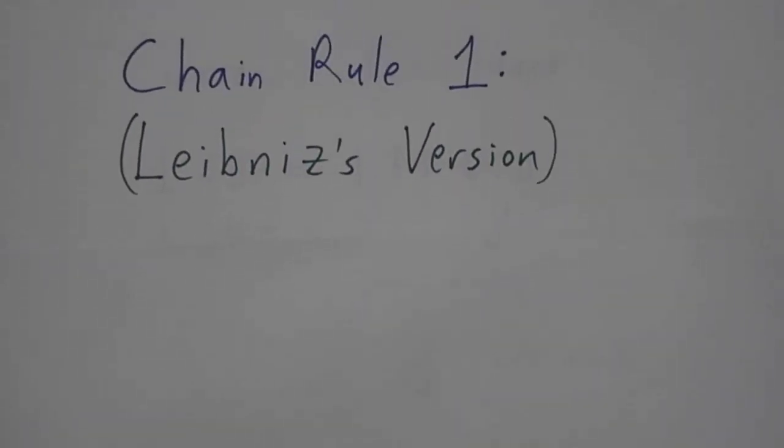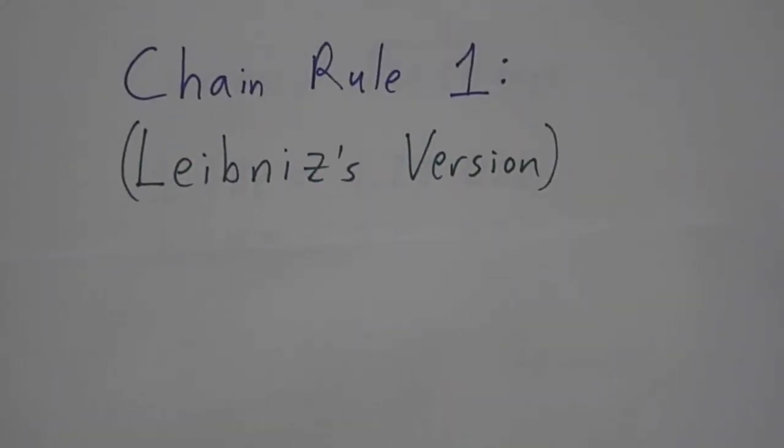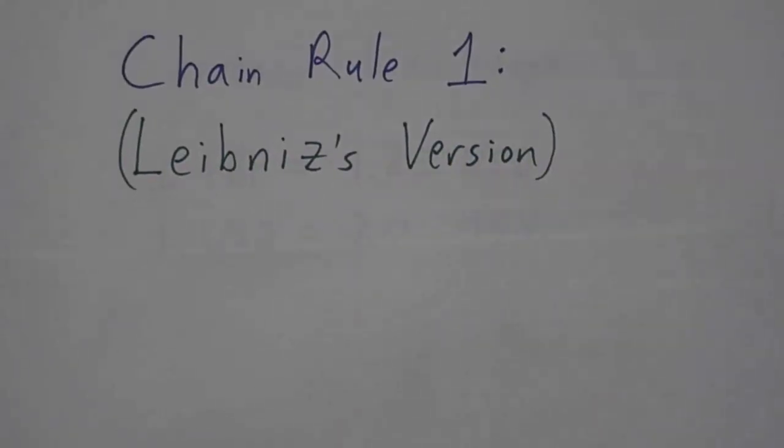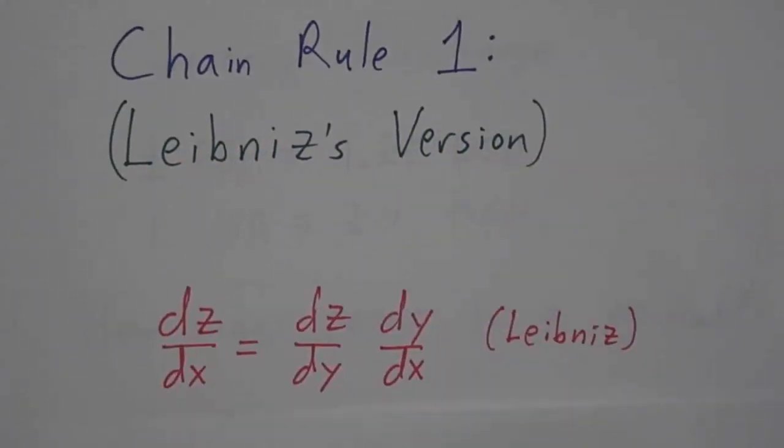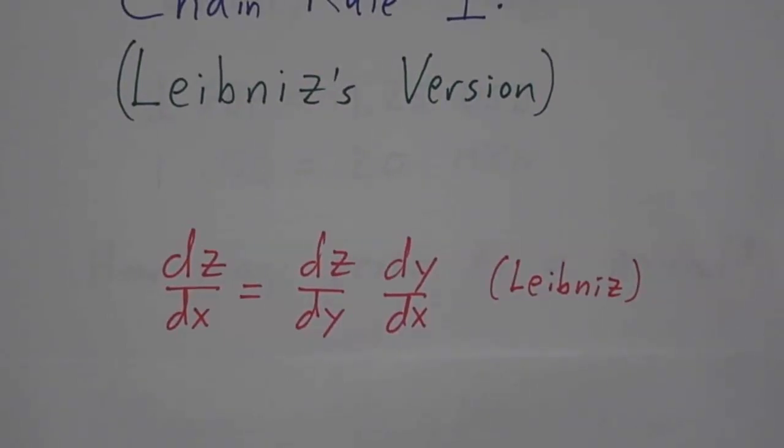In this video, we're going to start to talk about the chain rule. There are several versions of the chain rule. The first is Leibniz's version. That's what we're going to mostly talk about in this video.